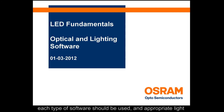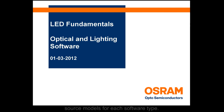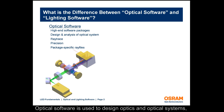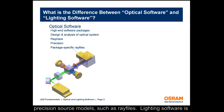We will also cover when each type of software should be used, and appropriate light source models for each software type. Optical software is used to design optics and optical systems, model optical effects according to the laws of physics, and use precision source models, such as ray files.